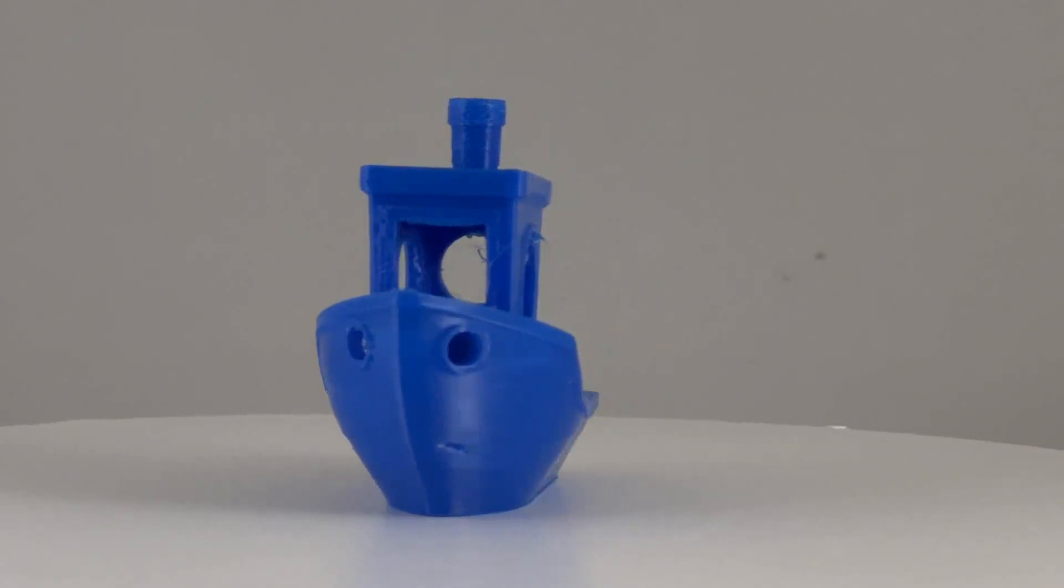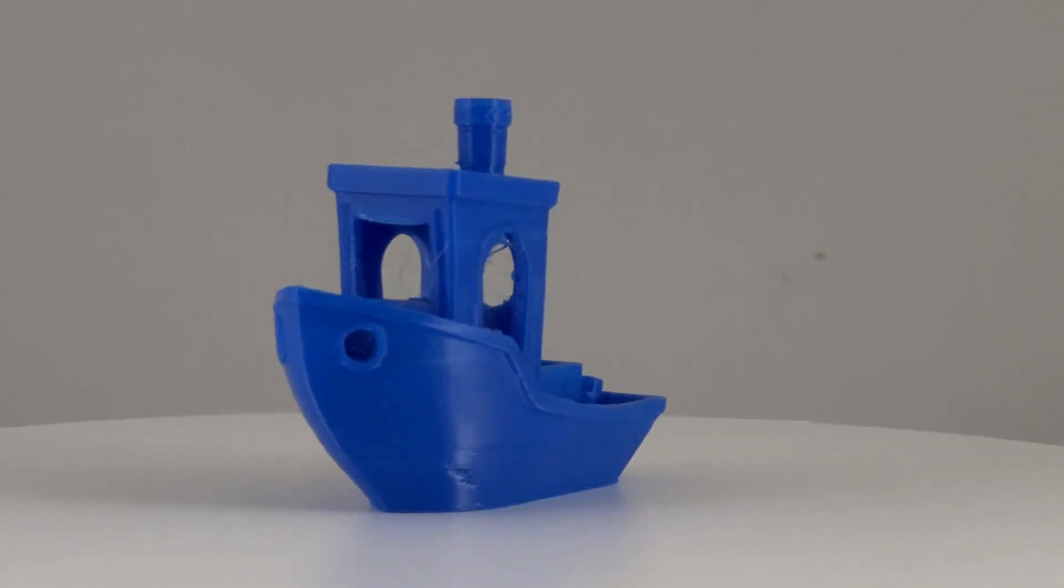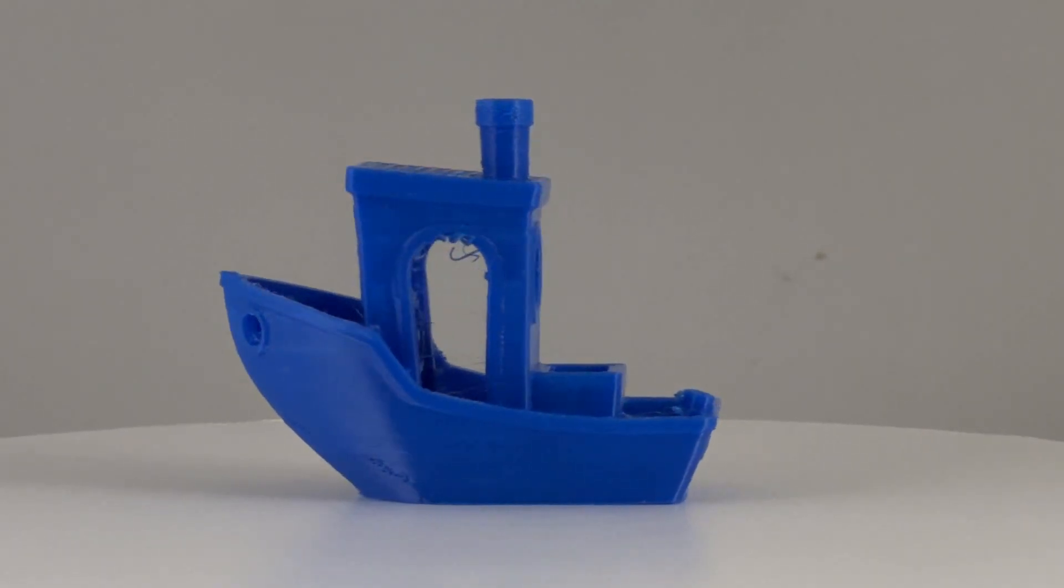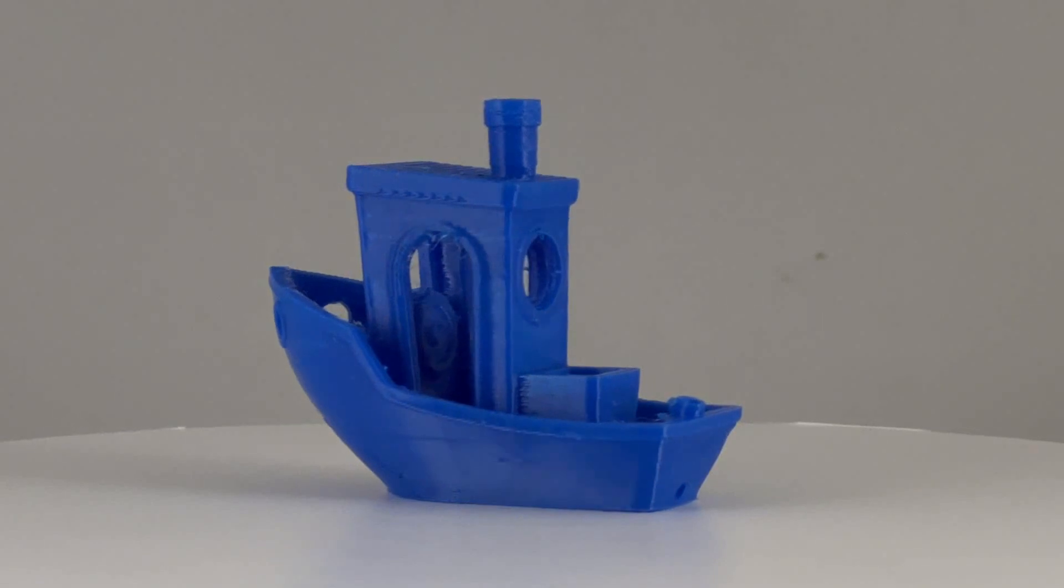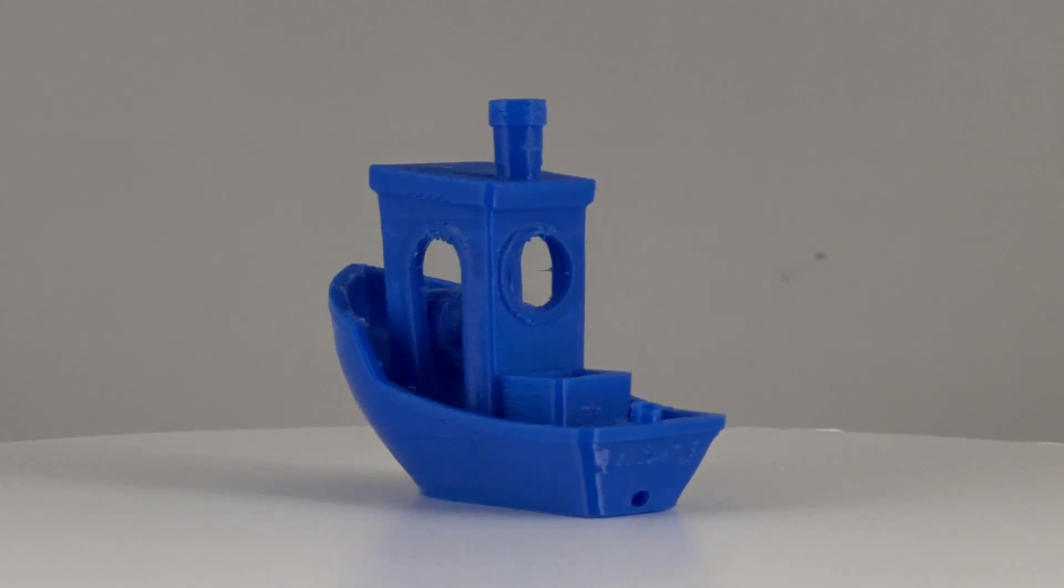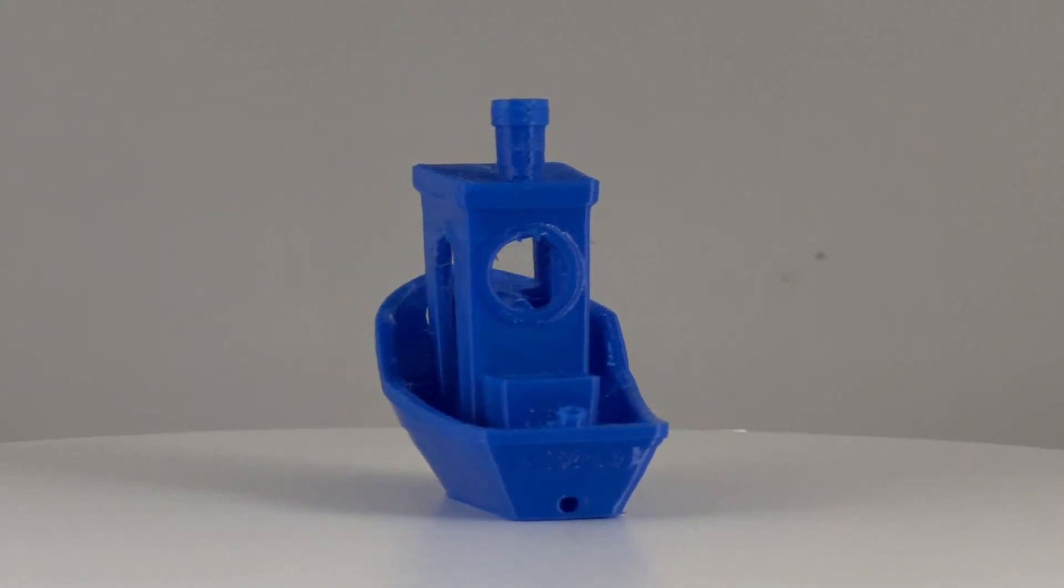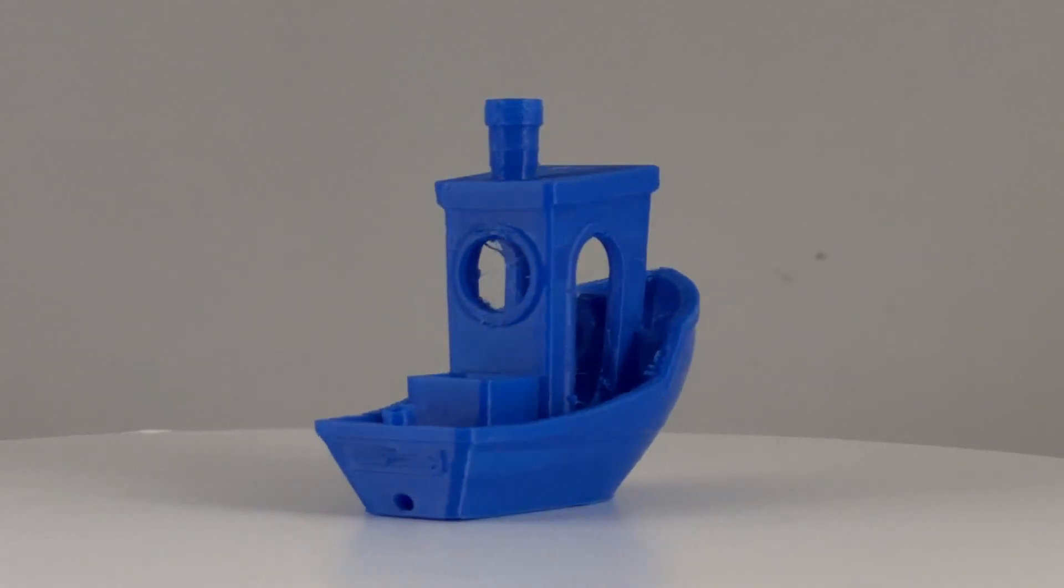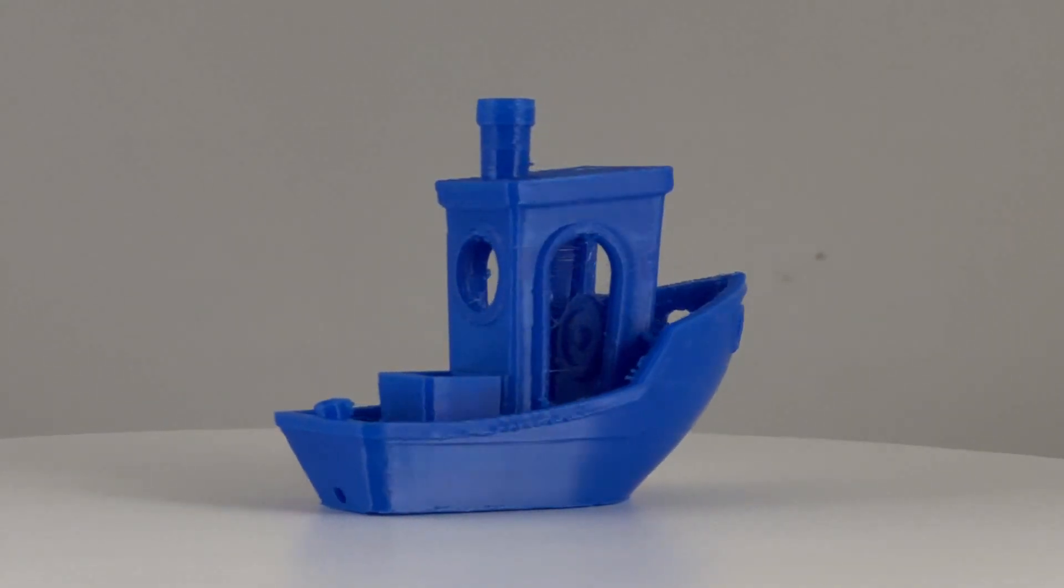Here's the blue TPU. Again, I'm not sure if I mentioned it, but the red TPU was run at 50 millimeters per second. This one, the blue one, was run at 80 millimeters per second. And to be honest, the 80 millimeter looks just as good as the 50, so you can definitely turn this up.